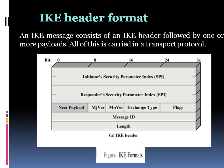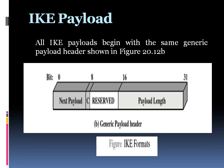The IKE payload format consists of: the Next Payload field, whose value is zero if this is the last payload in the message, otherwise it holds the type of the next payload. The Critical bit (C) is zero if the sender wants the recipient to skip the payload, and is set to one if the sender wants the recipient to reject the entire message. There is a Reserved field for future use. The Payload Length field indicates the length in octets of this payload, including the generic payload header.